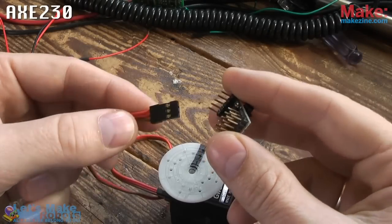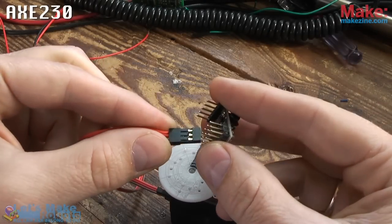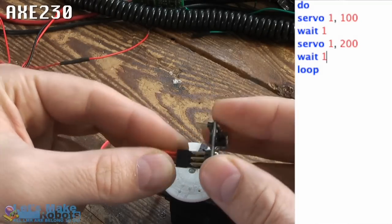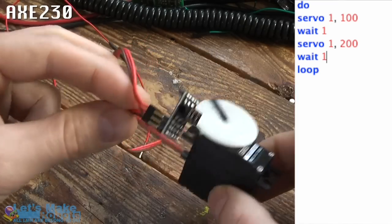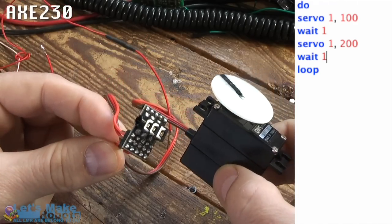This is the AXE 230 Pickaxe 08M microcontroller on a board. It's very easy to work with. I just uploaded the program you see on the right, which makes the servo go to position 100, wait a second, go to 200, wait a second and loop.